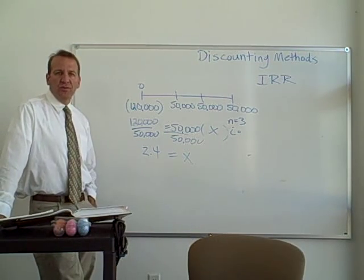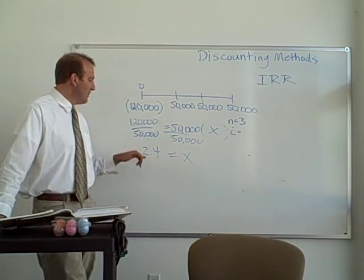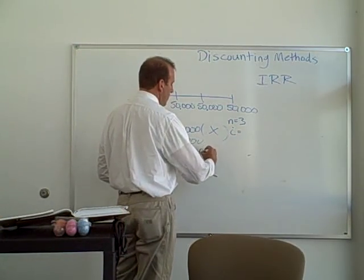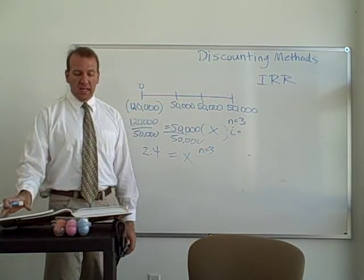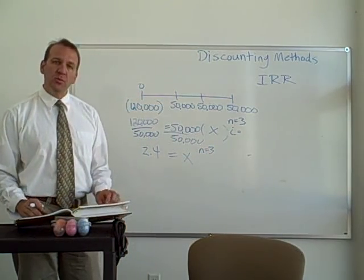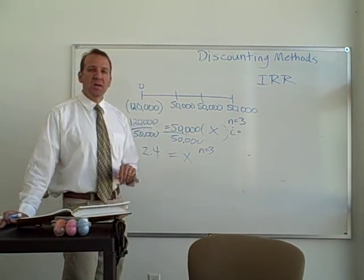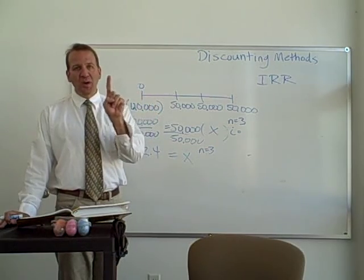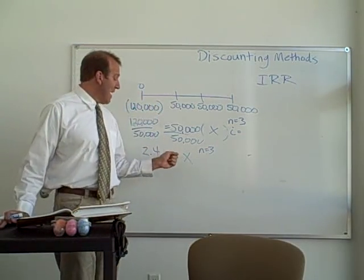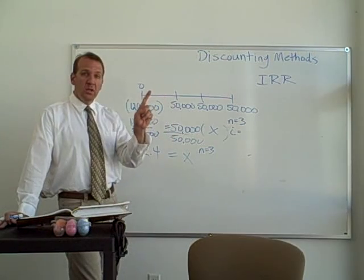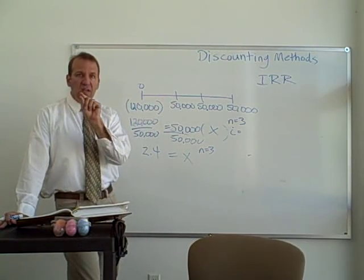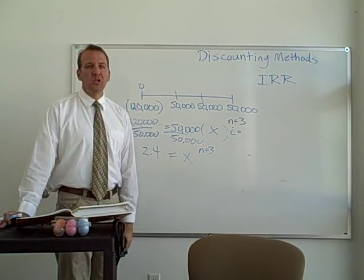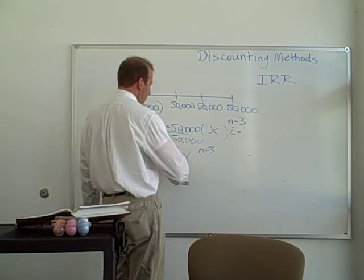Does x = 2.4 mean 2.4 percent? Absolutely not. We go to the same table on page 1,153, go down to three periods, and go across until we find that factor. At three periods, a factor of 2.4 corresponds to 12%. So the internal rate of return is 12%.